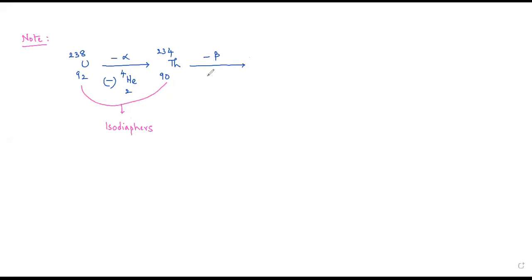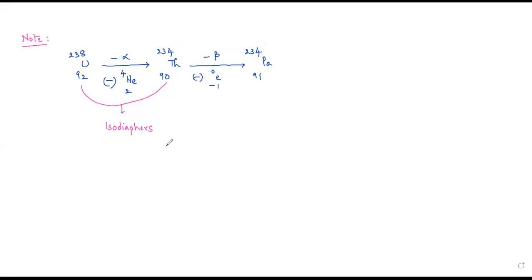When a beta particle is emitted — when thorium emits a beta particle — we get 90 minus (-1), giving atomic number 91, which is protactinium. The mass number does not change: 234 minus 0 gives 234. So we get protactinium-91-234. These two are isobars to each other. That means when a nuclide emits a beta particle, we get the isobar of it.